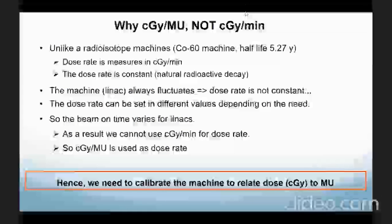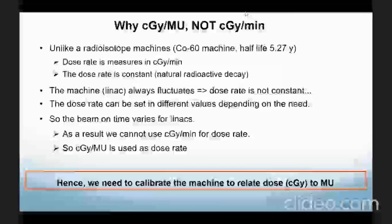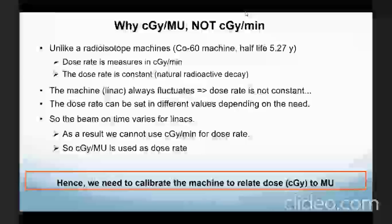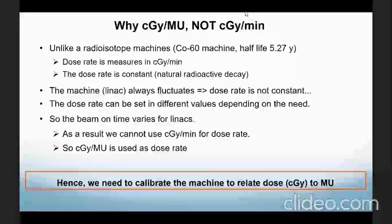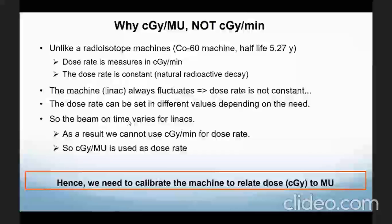As we said, why centiGray per MU and not centiGray per minute? Unlike a radioisotope machine — a radioisotope machine gives radiation based on time — a linear accelerator uses monitor units instead.